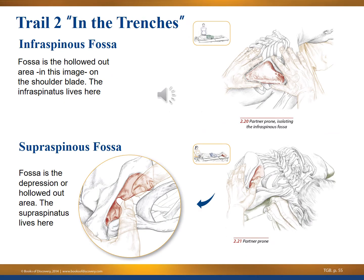Trail two in the trenches gives us bony landmarks and areas to find muscles to work. The infraspinatus fossa is a hollowed-out area right under the spine of the scapula where the infraspinatus lives. The supraspinous fossa is the depression at the top of the scapula bone where the supraspinatus — a rotator cuff muscle — is tucked in.